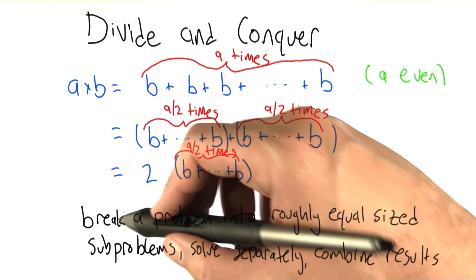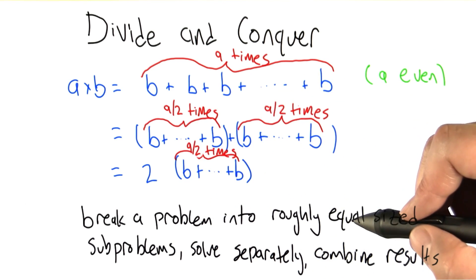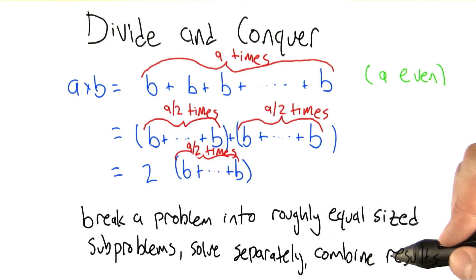The idea of divide and conquer is that you can break a problem into roughly equal sized subproblems, solve the subproblems separately, and combine the results.